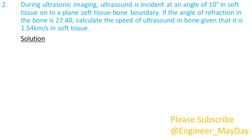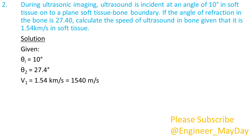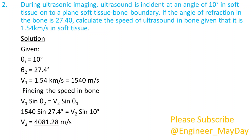Solution. Given: theta i equals 10 degrees, theta 2 equals 27.4 degrees, velocity v1 equals 1540 meters per second. Finding the speed in bone: V2 equals 4081.28 meters per second.